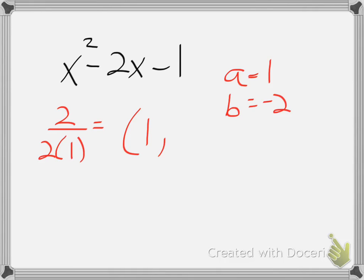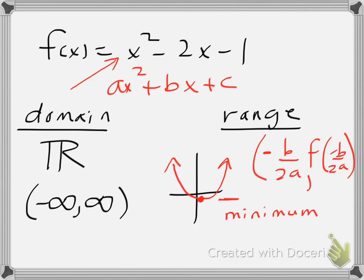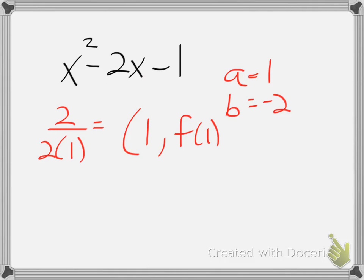So now to find my actual minimum value, I want to find what is f of 1, f being the original function. So putting 1 in there gives me 1 squared minus 2 times 1 minus 1, so I have 1 minus 2 minus 1, which gives me negative 2.